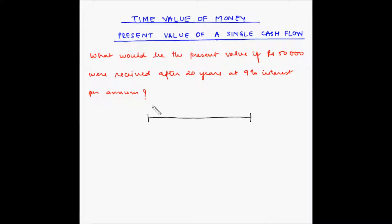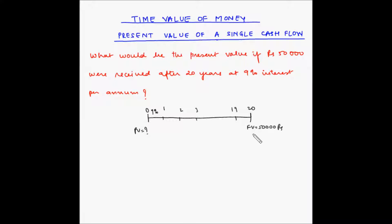The time scale spans 20 years: 0, 1, 2, 3, and so on through 19 and then 20. The rate of interest is 9% per annum, constant for each year. The present value is unknown, and we are receiving 50,000 rupees at the end of 20 years.